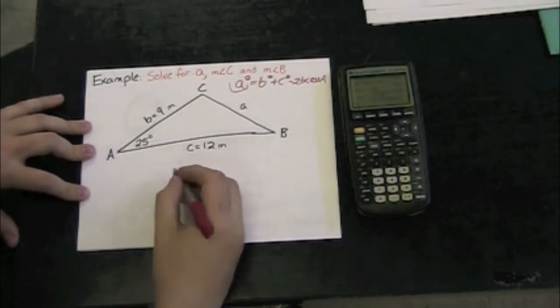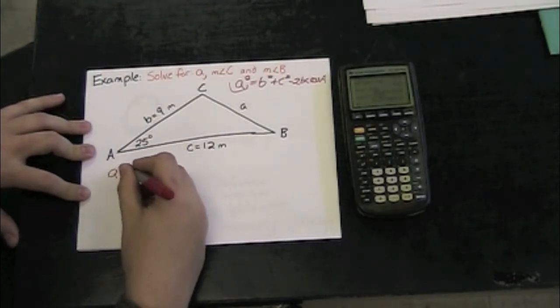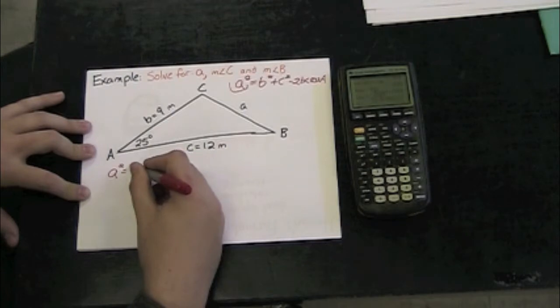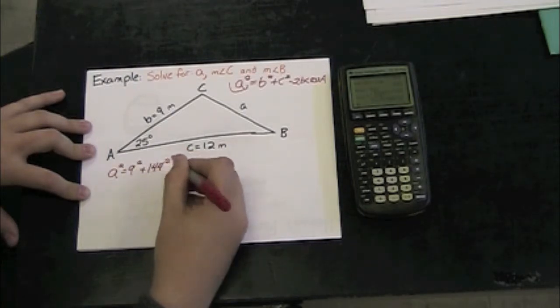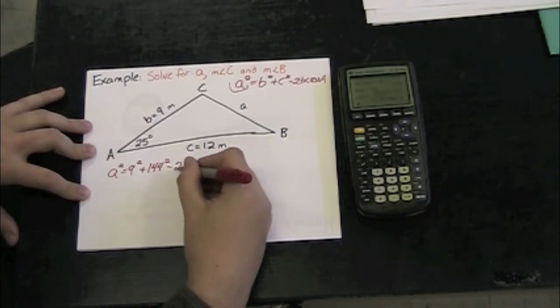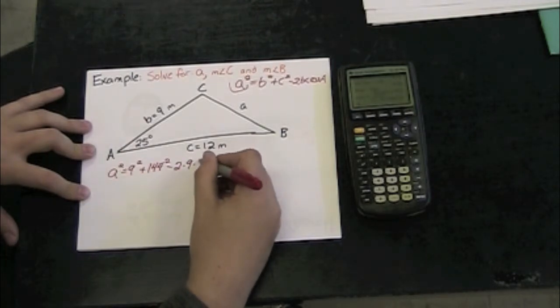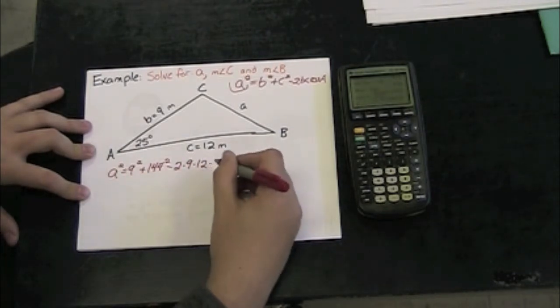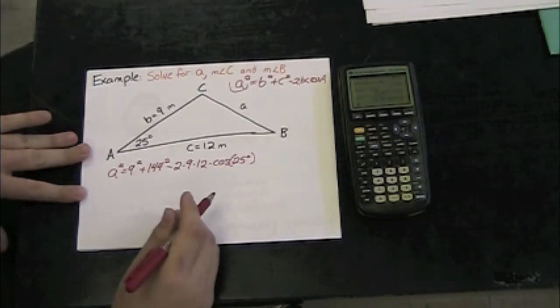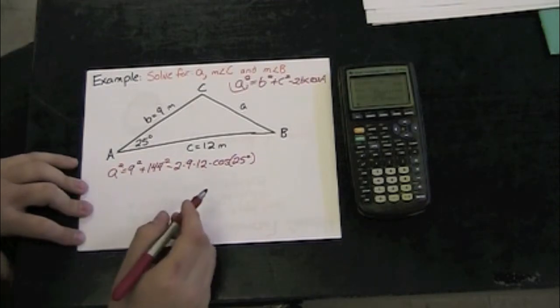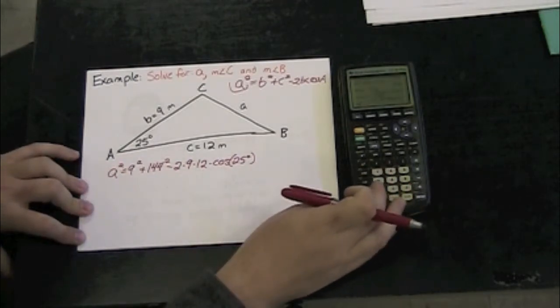So if I plug the other stuff in, I've got A² = 9² + 12² - 2 times 9 times 12 times cosine of 25 degrees.